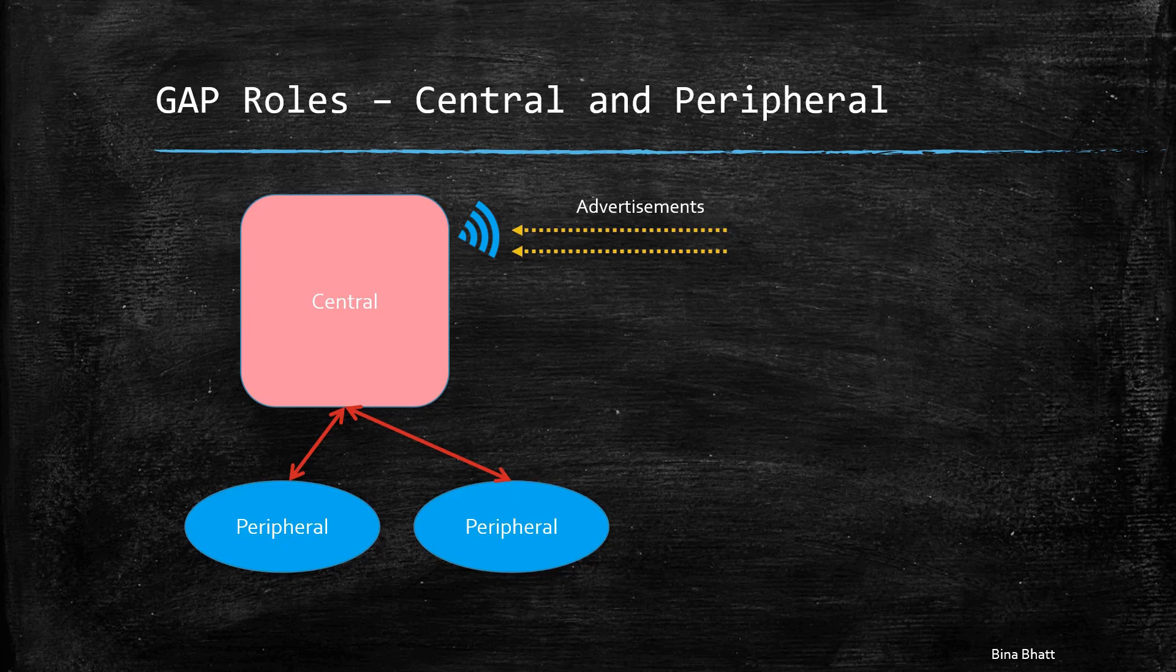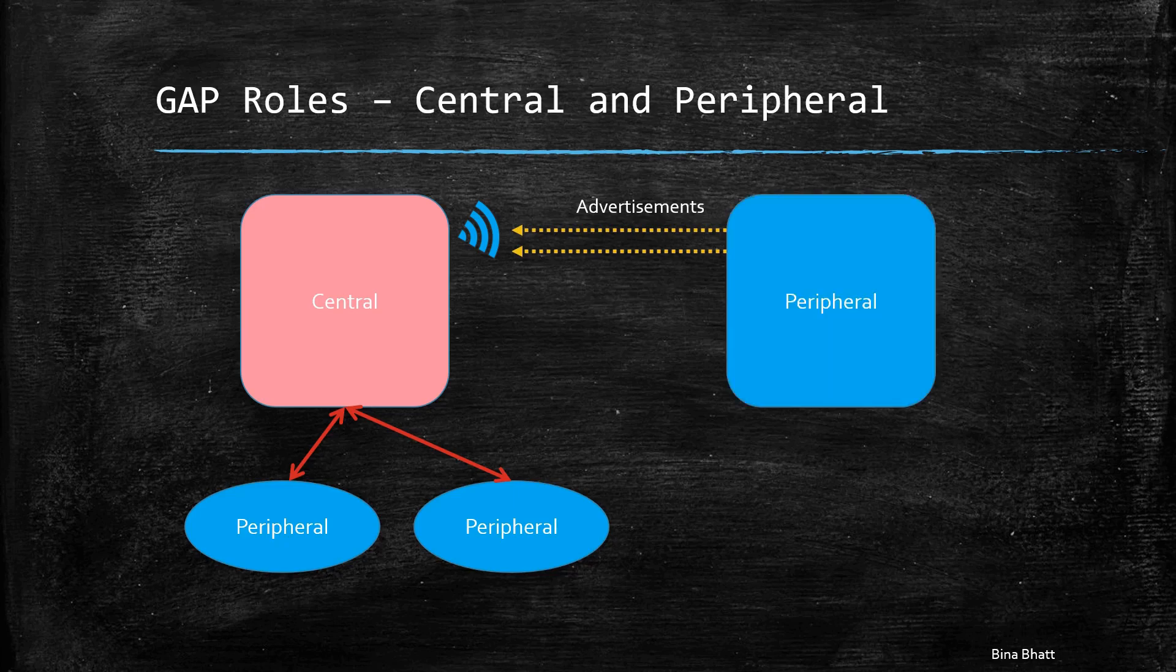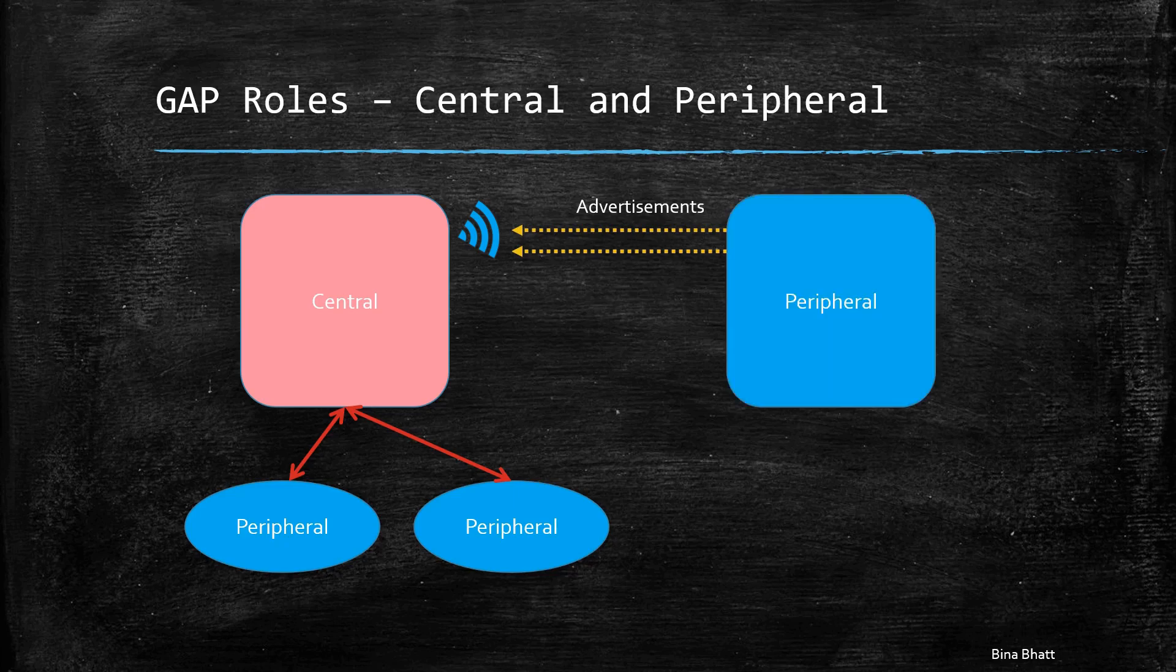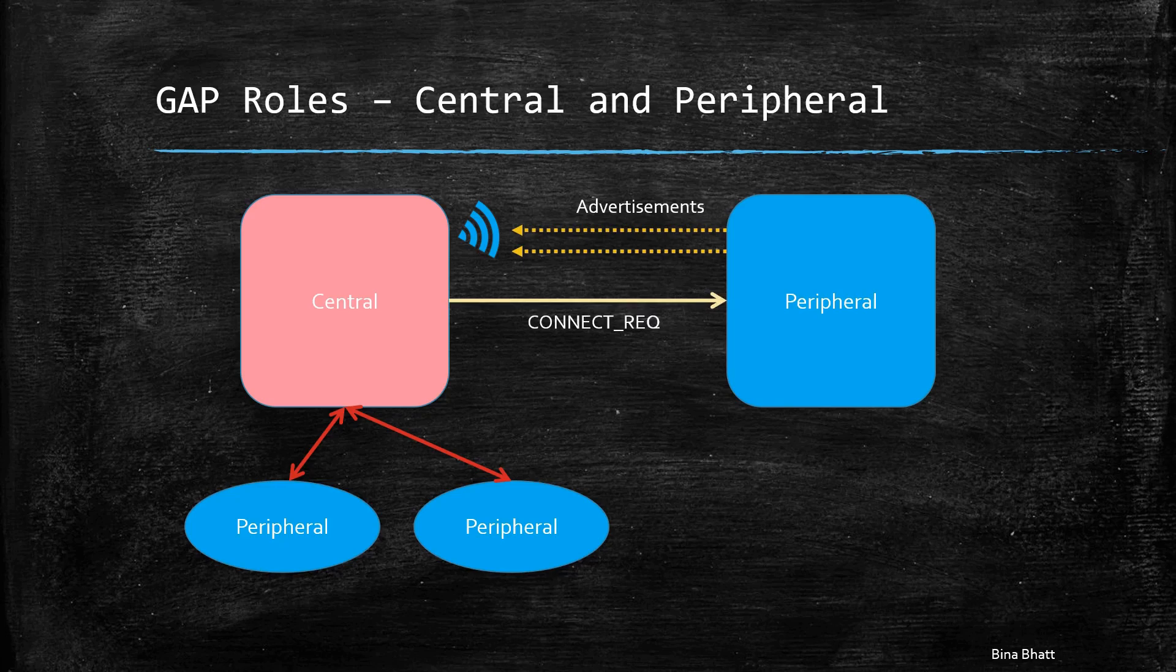Next, we have the role of peripheral. In this role, the device is responsible for sending out the advertising packets. The central, as we have seen earlier, scans for advertisements and sends out a connection request.